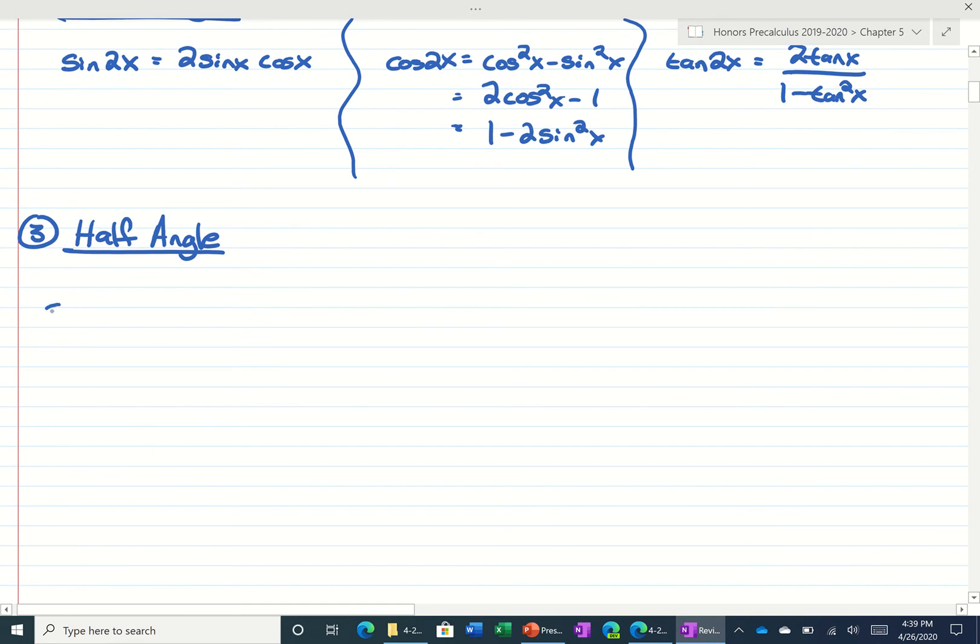we had sine of a half angle would be plus or minus square root of 1 minus the cosine of x divided by 2. So for example,